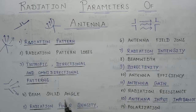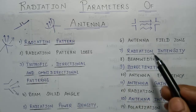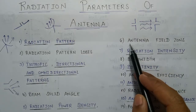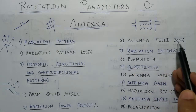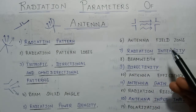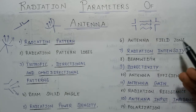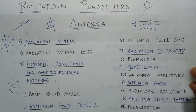In the fifth lecture we will talk about radiation power density and the power radiated by an antenna, represented by P-radiated. In the sixth lecture we will talk about antenna field zones. There are two field zones associated with an antenna: near field zones and far field zones.